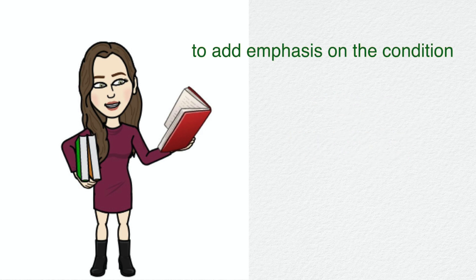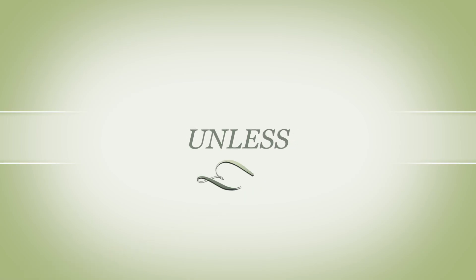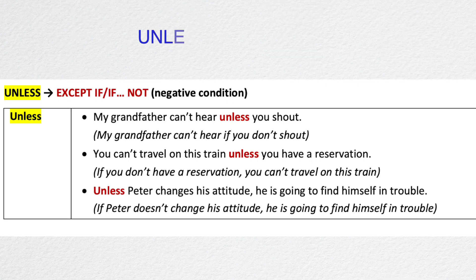Let's take a look at the first one: 'unless.' When we substitute 'unless' in place of 'if,' the meaning of 'unless' is basically 'if not.' It is used to say that something can only happen or be true in a particular situation. For example, 'My grandfather can't hear unless you shout.' Here, 'unless' is serving as a substitute for 'if not,' so we can also say, 'My grandfather can't hear if you don't shout.'